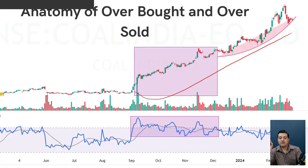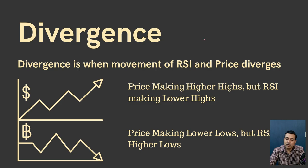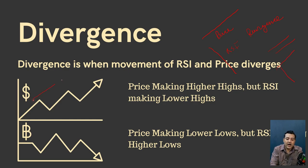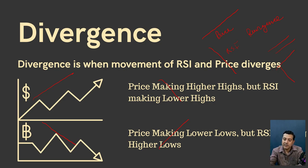What is divergence? Divergence means that when price is going up but RSI is going down at that particular time, they have diverged from their normal path. So if price makes higher highs but RSI makes lower highs, that is bearish divergence. Inversely, when price makes lower lows but RSI makes higher lows, that is bullish divergence. When looking for bearish divergence, match the highs. When looking for bullish divergence, match the lows.